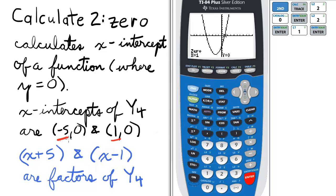Now that we know the x-intercepts are negative 5, 0 and 1, 0, we can factor this particular quadratic by changing the signs of the roots.